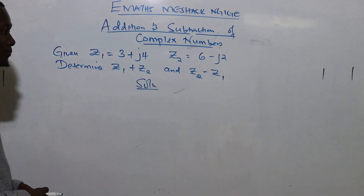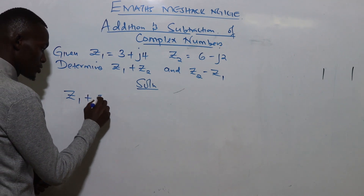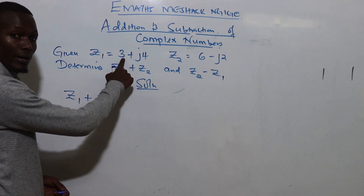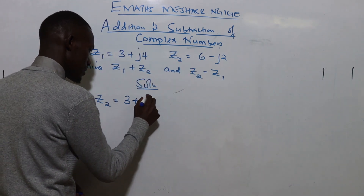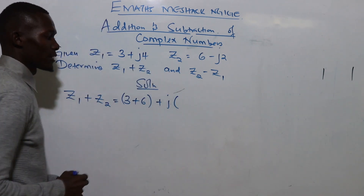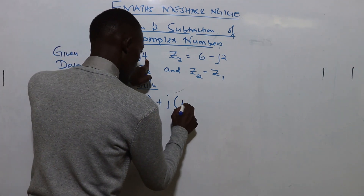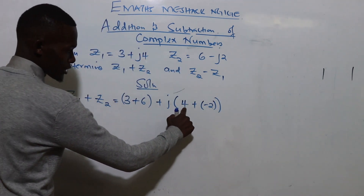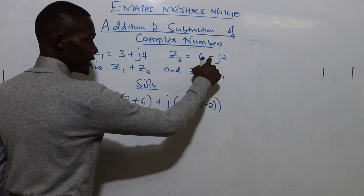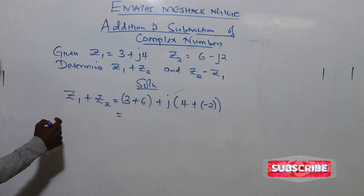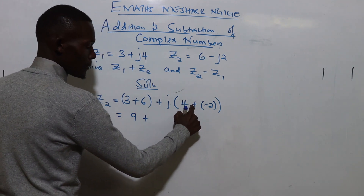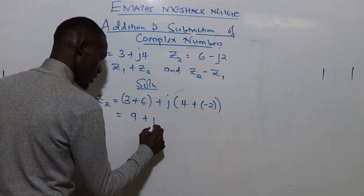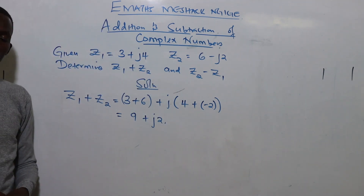For z1 plus z2, we add the real parts and the imaginary parts. The real part of z1 is 3 and of z2 is 6, so we have 3 plus 6. For the imaginary part we have 4 plus negative 2, which is 4 minus 2. So 3 plus 6 gives 9, and 4 minus 2 gives 2, therefore z1 plus z2 equals 9 plus j2.